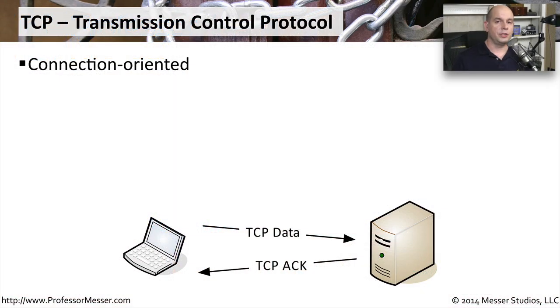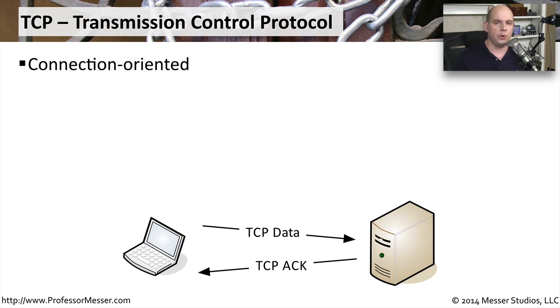On IP networks, there are two primary protocols that are used to get data from one side of the network to the other. One of these is called TCP, or Transmission Control Protocol. This is what we call a connection-oriented protocol.